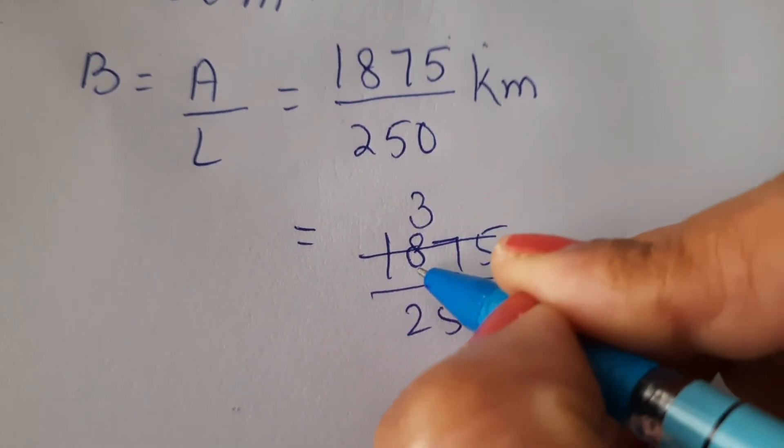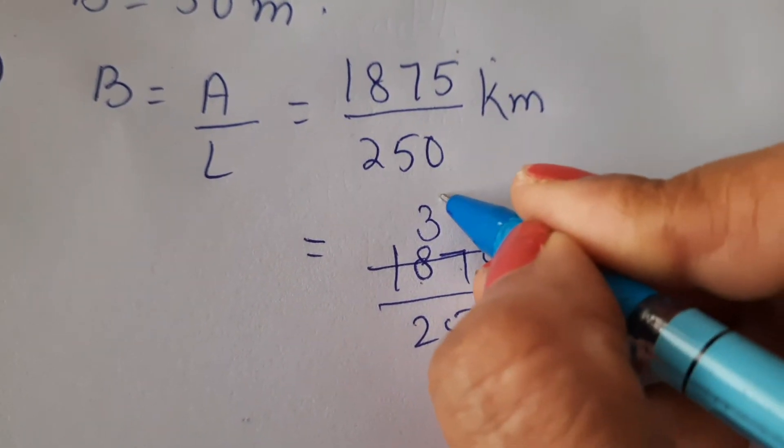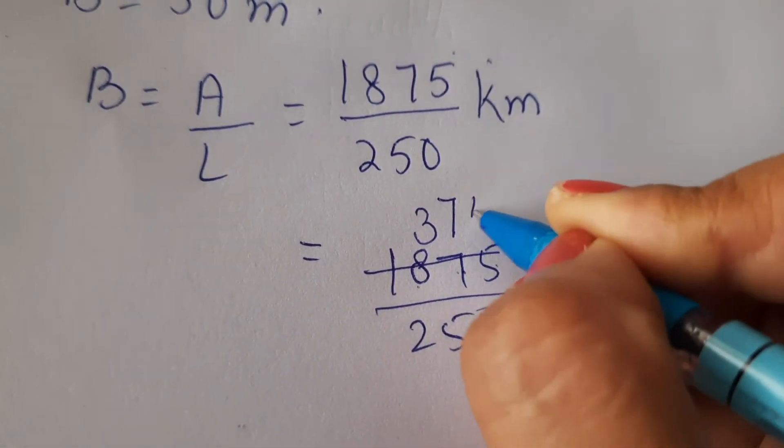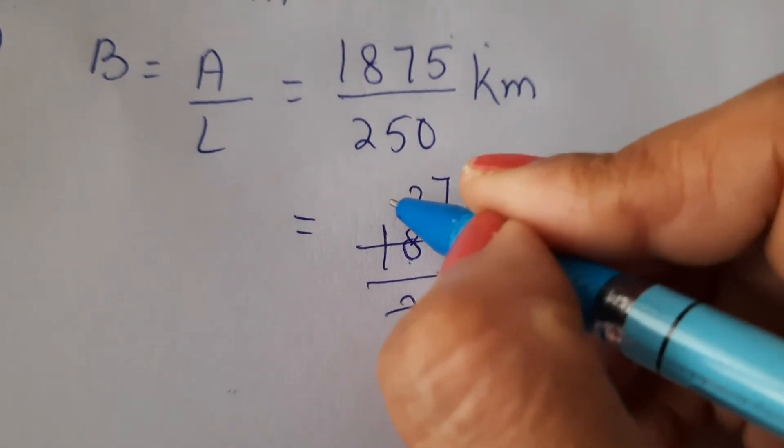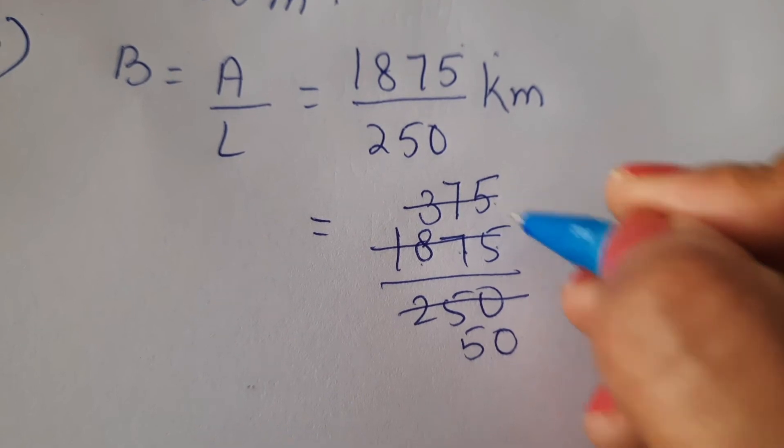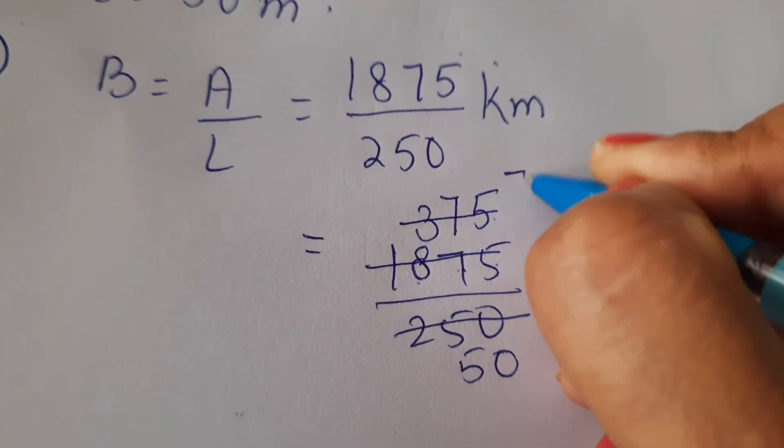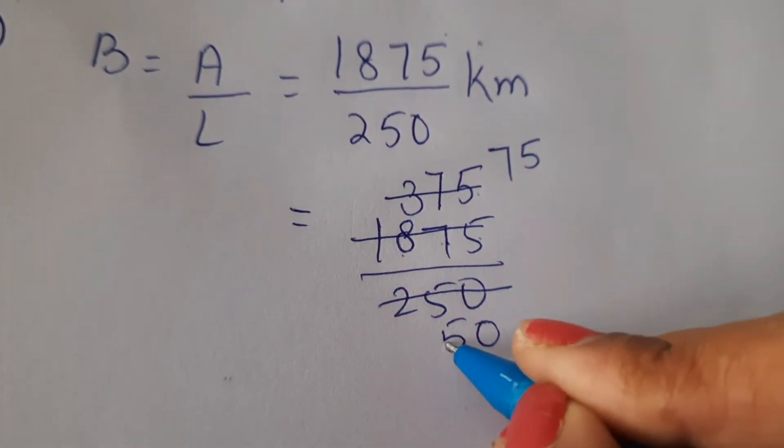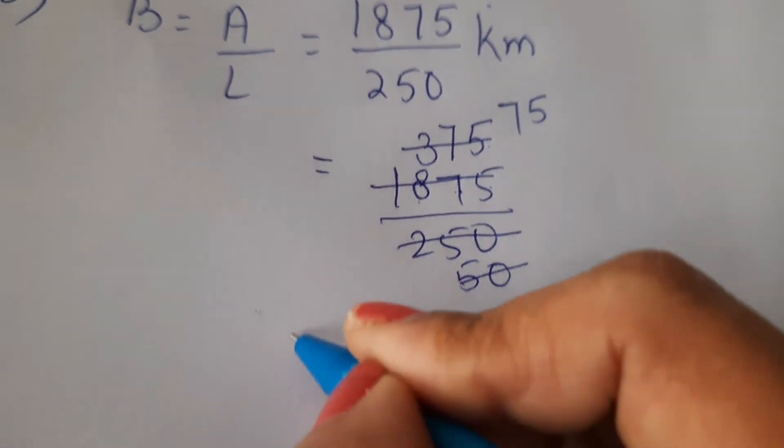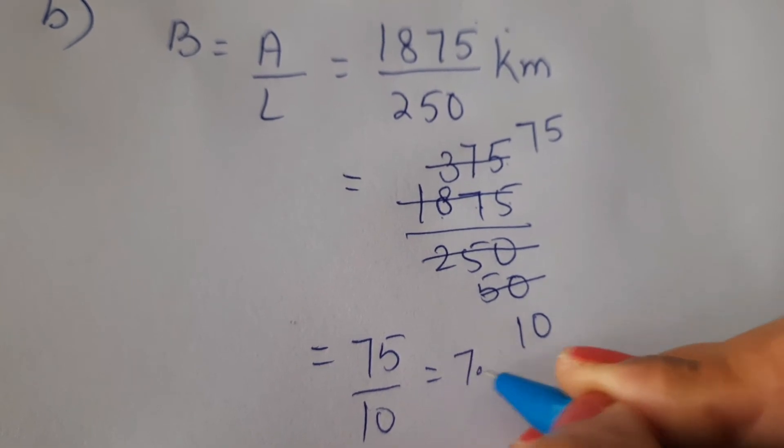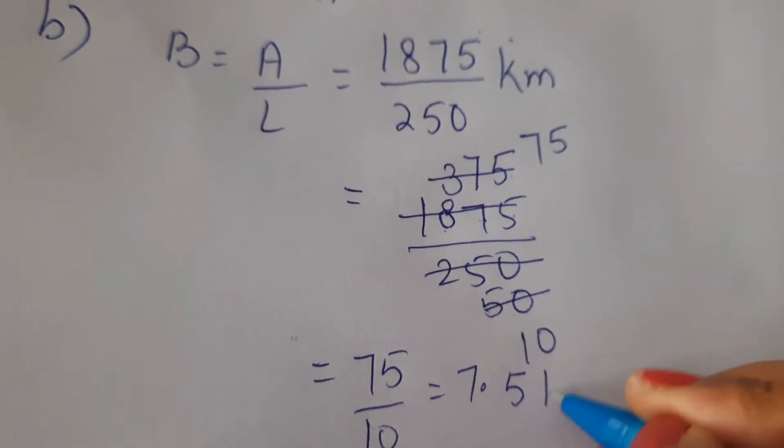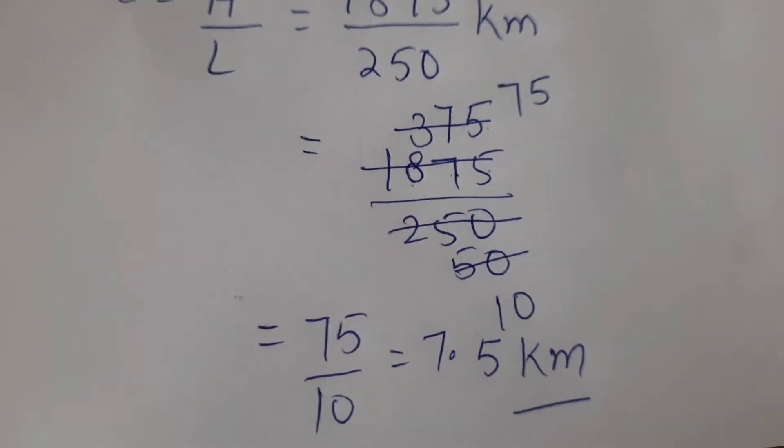1875 divided by 250. 5 threes are 15. 5 sevens are 35. 5 fives are 25. 5 fives are 25 and 0. Again divisible by 5. So this has become 75 divided by 10, which is 7.5. So breadth will be 7.5 kilometers.